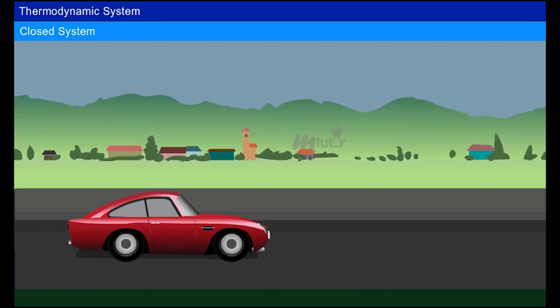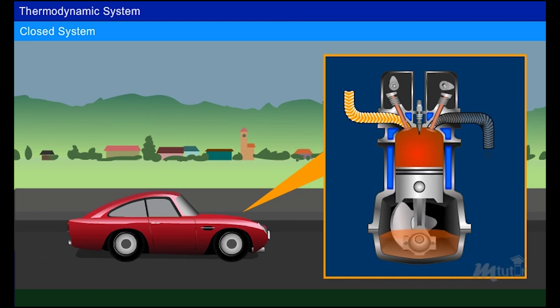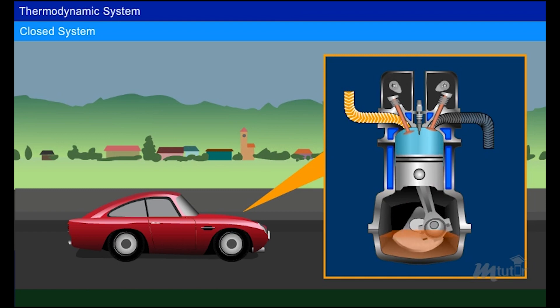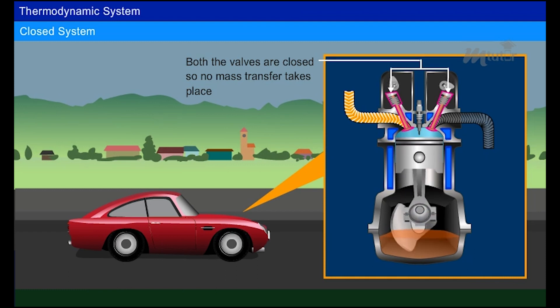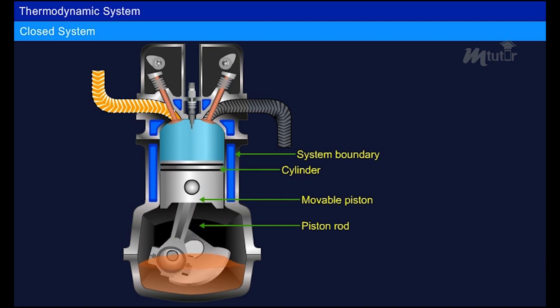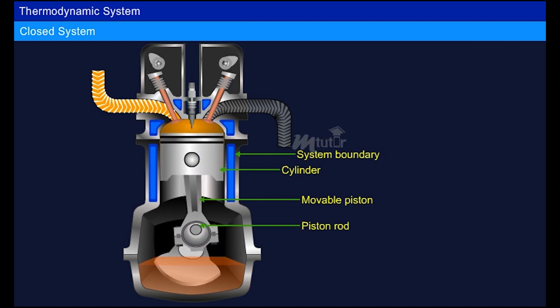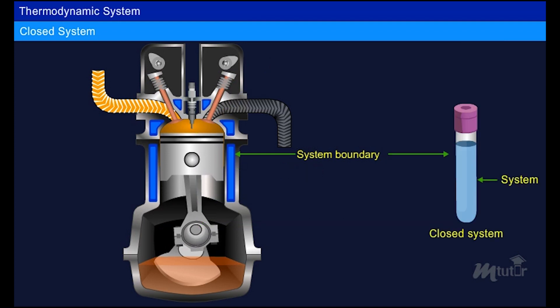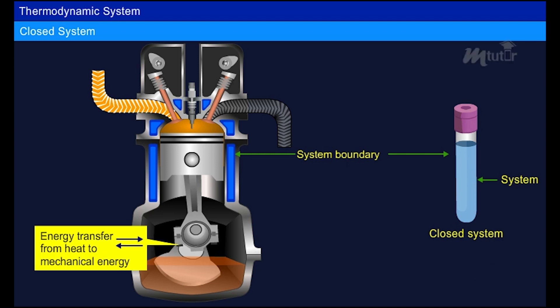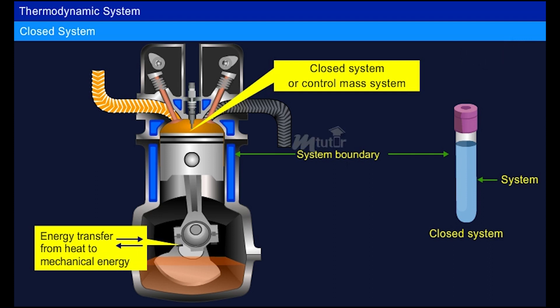Let us analyze the working of a car engine to discuss different thermodynamic systems. In an IC engine, the inlet valve opens and air is drawn during the suction stroke. During the compression stroke, both valves are closed, the piston moves upwards and compresses the air at high pressure and temperature. No mass transfer takes place since all valves are closed until the piston reaches top dead center. This is an example of a closed system — only energy transfer across the system boundaries — also called a control mass system.